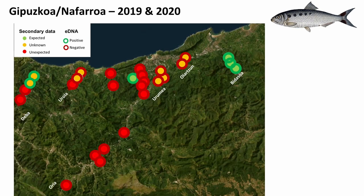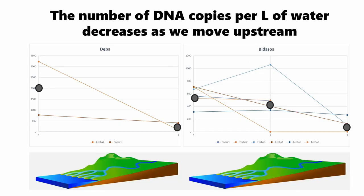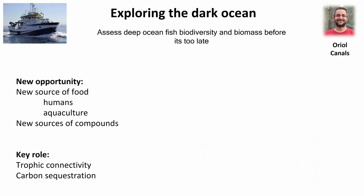In rivers in the Basque area, we monitored shad using eDNA. Results confirm negatives, confirm positives from other methods, and resolve unknowns. Interestingly, temporal changes can be detected: at one location we found a negative on May 5th but a positive on May 20th, consistent with expert knowledge that the shad had not yet returned on the earlier date. We also observe that DNA copies per liter decrease as we move upstream — preliminary but interesting.